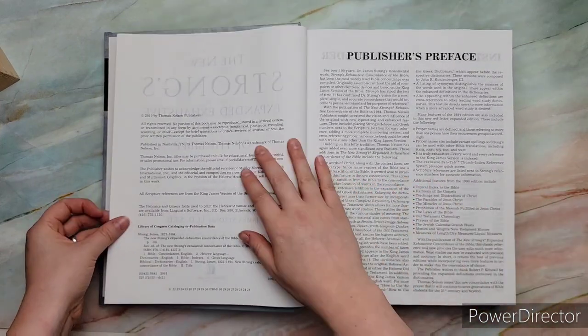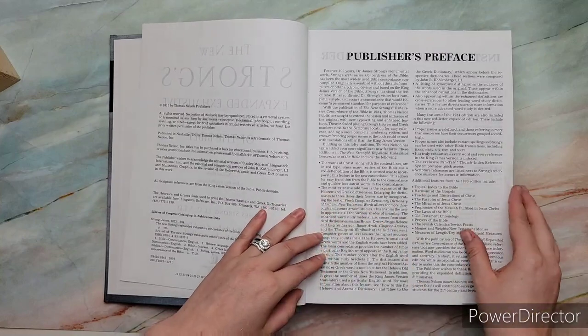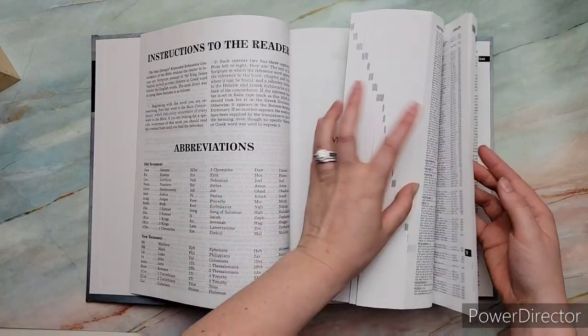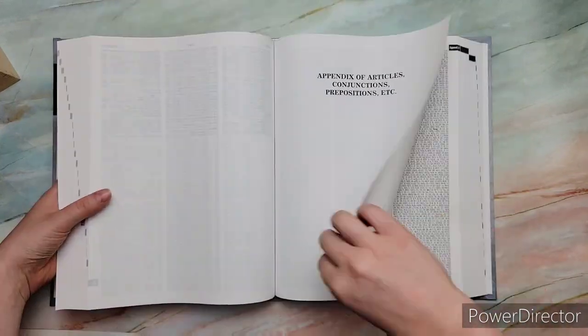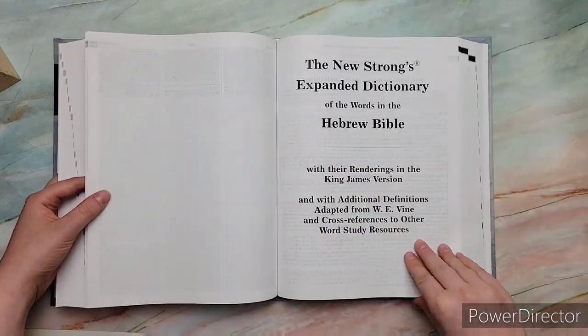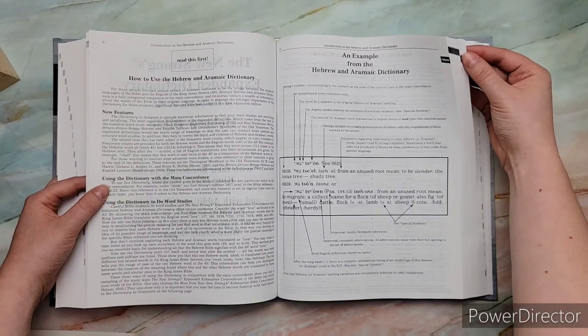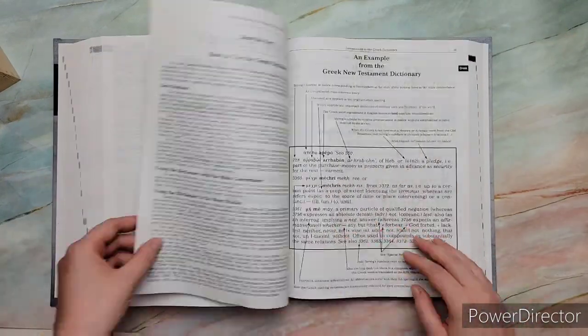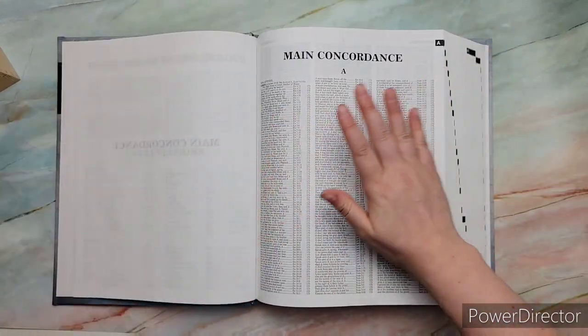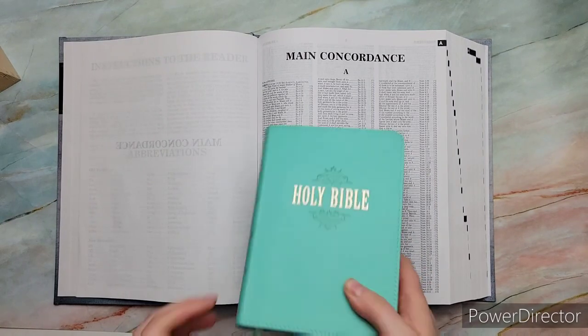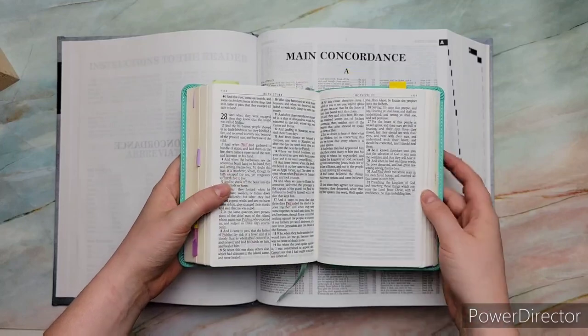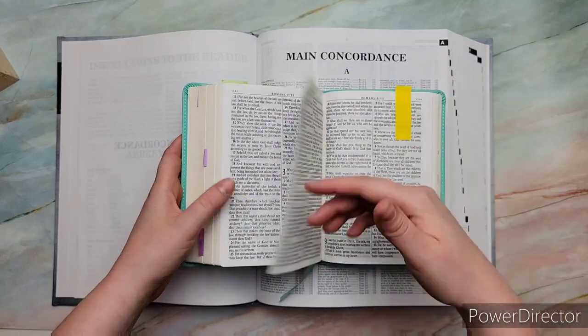It also has some extras in the back. So this is the 2010 edition by Thomas Nelson. So it has the main concordance A through Z, and then it has the Greek and the Hebrew. It also has the appendix of the articles, conjunctions, and prepositions. It also has how to read the Hebrew and the Greek, what you would look through.